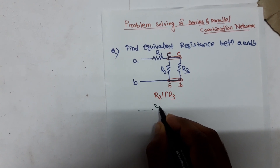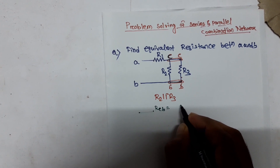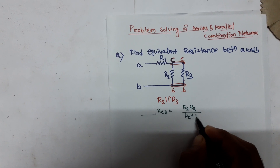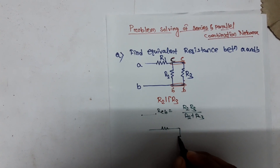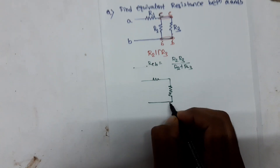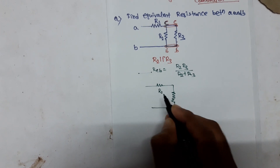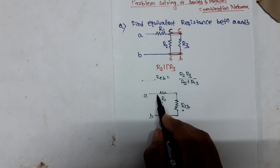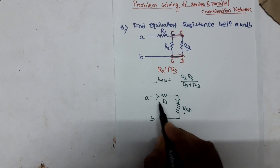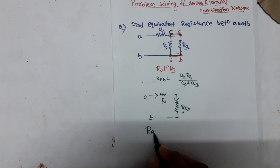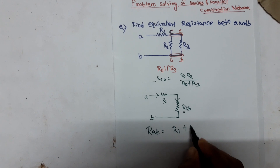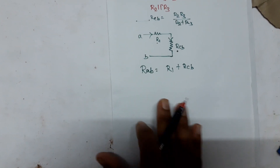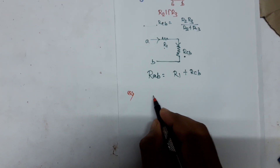First we find R_CB equal to R2 parallel R3, which is (R2 × R3) / (R2 + R3). We redraw the modified circuit with R1 and R_CB. Here R1 and R_CB are connected in series because the same current is flowing through them. So the total equivalent resistance R_AB equals R1 plus R_CB.